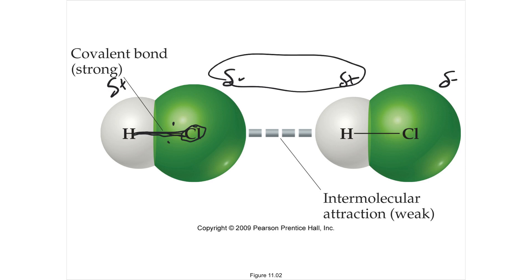There are several different kinds of intermolecular forces, and they account for a lot of the physical properties that you see. For instance, if you were going to boil a liquid into a gas, you have to pull the molecules away from each other, and if there is an attraction, you have to break that attraction. If the attraction is stronger, you're going to have a higher boiling point. The weaker the attraction, the lower the boiling point, because you're ripping these molecules away from each other.